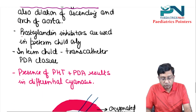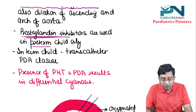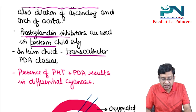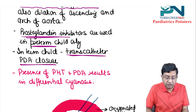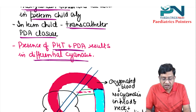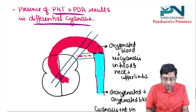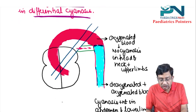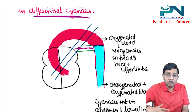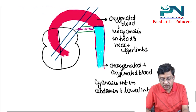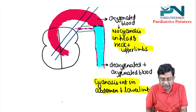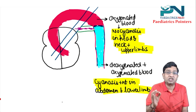Prostaglandin inhibitors are used only in the preterm child — not in the term child. In the term child, you go for transcatheter PDA closure. If pulmonary hypertension develops in PDA, this results in differential cyanosis. The blood flows from pulmonary artery to aorta, so deoxygenated blood goes only to the lower portion of the body. Therefore, cyanosis is present in the abdomen and lower limbs, but not in the head, neck, and upper limbs. This is called differential cyanosis.